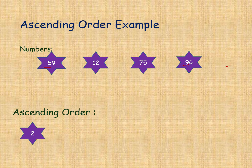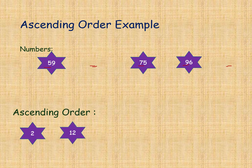Next, in the remaining numbers 59, 12, 75, 96, the next smallest tens digit is 1, so 12 comes next. Then in 59, 75, and 96, we compare tens places: 5, 7, and 9. The smallest is 5, so 59 will come next.